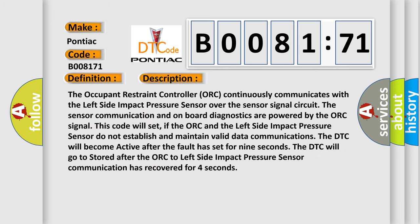The occupant restraint controller (ORC) continuously communicates with the left side impact pressure sensor over the sensor signal circuit. The sensor communication and onboard diagnostics are powered by the ORC signal. This code will set if the ORC and the left side impact pressure sensor do not establish and maintain valid data communications.